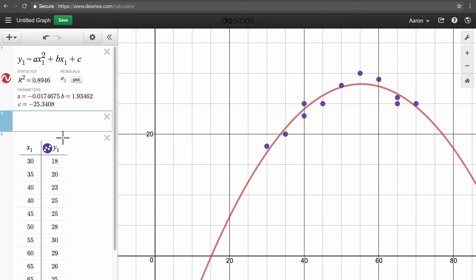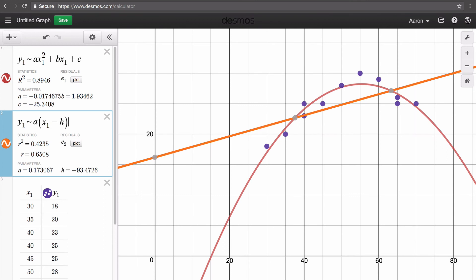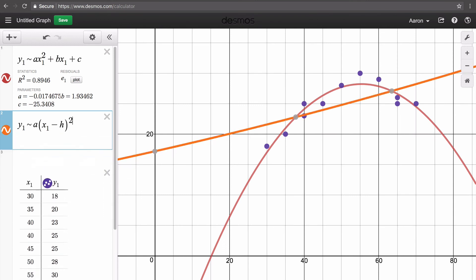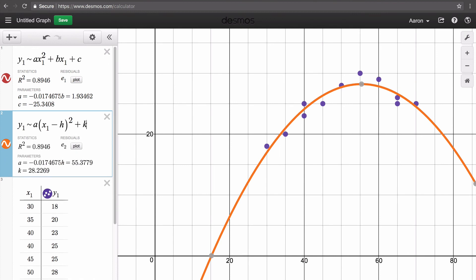So vertex form is y equals a times the quantity x minus h squared plus k. Again, anytime we have an x or a y value, we have to use the subscripts that we have in our table so it knows what data we're referencing. So it's y sub 1 is about a times the quantity x sub 1 minus h. This whole quantity is being squared, so we're going to raise it to the second power, and then plus our value of k for our vertex.